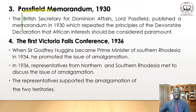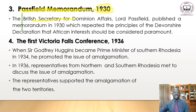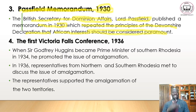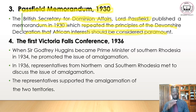In 1930 there was the Passfield Memorandum. The British Secretary for Dominion Affairs, Lord Passfield, published a memorandum in 1930 which repeated the principles of the Devonshire Declaration — that African interests should be considered as paramount. The memorandum reinforced the terms of the Devonshire Declaration: African interests must come first in any drive towards federation.